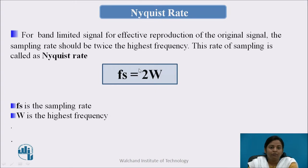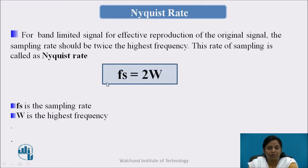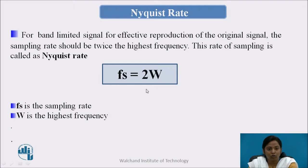Next is the Nyquist rate. For a band-limited signal, for effective reproduction of the original signal, the sampling rate should be twice the highest frequency. This rate of sampling is called the Nyquist rate, that is fs = 2W.